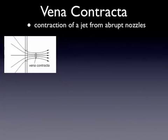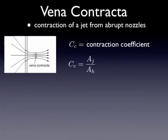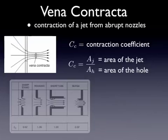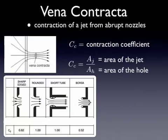This phenomenon is called vena contracta, and we handle it with a contraction coefficient, which is simply the ratio of the area of the jet to the area of the hole. In the FE handbook, this table provides contraction coefficients for different types of openings. You can see with tubes and well-rounded openings, you will get no contraction at all.